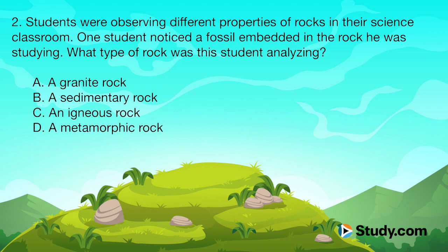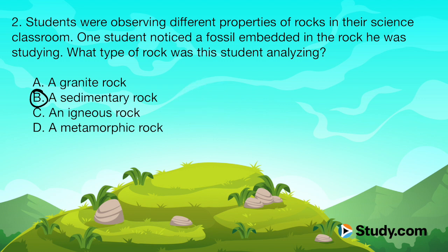Once again, you can see the importance of understanding your three rock types. We had just talked about the three major forms: sedimentary, igneous, and metamorphic. The correct answer here is going to be B, the sedimentary rock. Because if an organism were to die, it would die at the surface of the earth, and over time it would get embedded in that surface. So sedimentary rock is the correct answer for where we're going to find fossils.